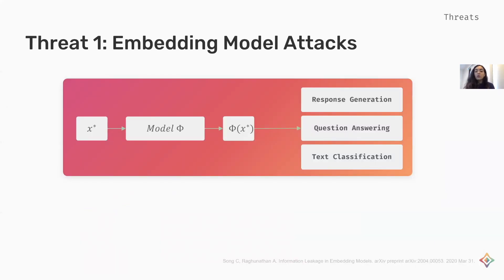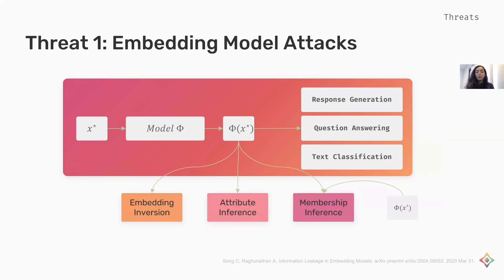Word and sentence embeddings can be used to infer data related to the contributors as well. Embeddings are a type of real-valued vector representations that allow words with similar meanings to have similar representations. We can learn embeddings by training an embedding model, let's call it phi. We then feed sensitive information x* to phi and get the embeddings for that input. This embedding can be used for response generation, question answering, and text classification. There are three sets of attacks that can be mounted on this embedding: embedding inversion, where the attacker tries to invert the embedding and find the actual sequence x*; attribute inference, where the attacker tries to infer attributes about x*; and membership inference, where the attacker tries to infer if x* or its context x' have been used for training the embedding model.